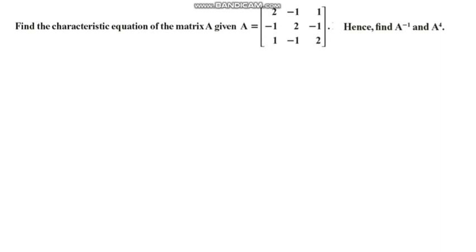You must be thorough with matrix multiplication. When two matrices of the same order are given, you multiply rows into columns respectively. Let us see the solution to the problem — first we consider the characteristic equation.